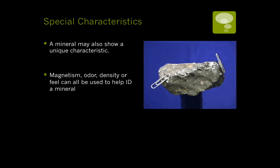Some minerals have very special characteristics. This picture is of magnetite — it is magnetic. Some minerals have a color where they feel greasy, and some are incredibly soft and powder in your fingers. Sometimes these are helpful techniques in order to identify a mineral.